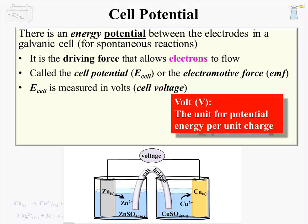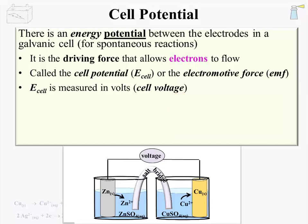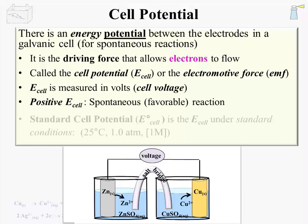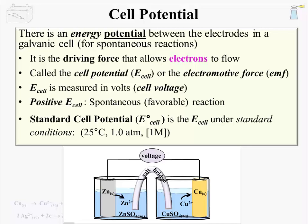A galvanic cell has a positive E-cell if the reaction is spontaneous or favorable. Non-spontaneous or unfavorable reactions have a negative E-cell. The introductory stage of the discussion of E-cells is usually limited to the standard cell potential, E superscript O subscript cell, or EO cell. It is the E-cell under standard conditions: 25 degrees Celsius, 1.0 atmosphere pressure, and aqueous concentrations of 1 molar. With these conditional limitations, we can directly compare the potential of different reactions.